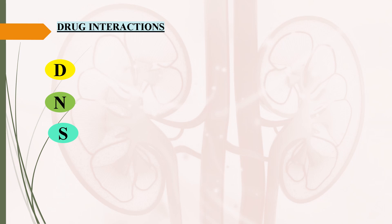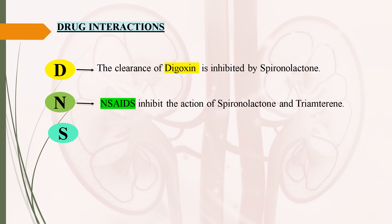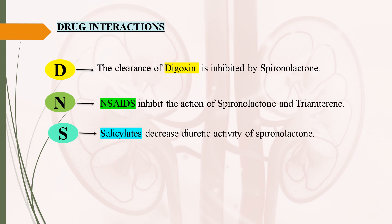Coming to drug interactions: you can remember these with the mnemonic DNS, where D stands for digoxin, N stands for NSAIDs, and S stands for salicylates. The clearance of digoxin is inhibited by spironolactone. NSAIDs inhibit the action of spironolactone and triamterene. Salicylates decrease the diuretic activity of spironolactone.